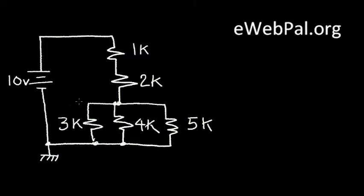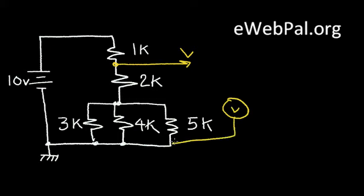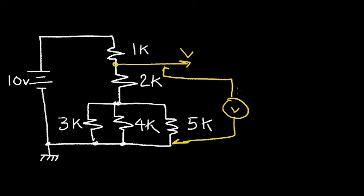Let's solve another resistor problem. Here I have a battery of 10 volts applied to a resistor network. Here I have two resistors in series, and at the bottom I have three resistors in parallel. I want to find the voltage at this point — let's call it V. If I put a voltmeter from ground to this point right here, what voltage do I read? To solve this problem, you first want to compute the current flowing out of the battery. Put the video on pause and see if you can come up with the answer.